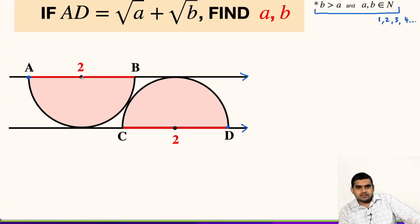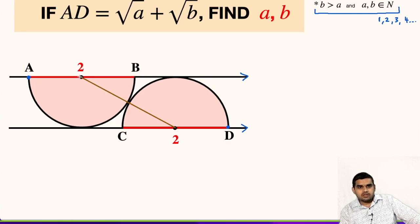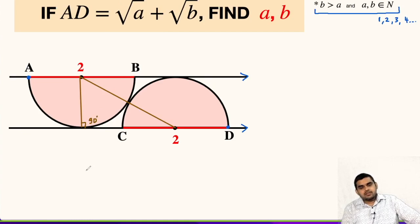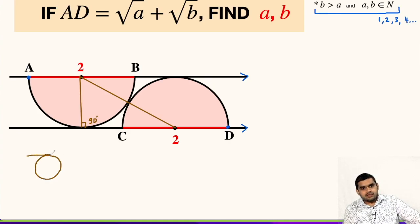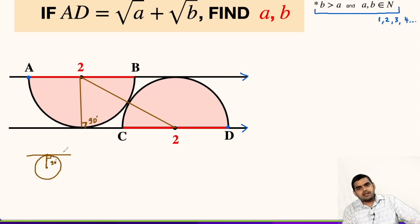In order to solve this question, first of all let us join the two center points. We will also drop a perpendicular from the center of the first semicircle, so this angle will be 90 degrees. The reason is we have a theorem: if this is the tangent to the circle, this point is the center, and this is the point of contact, then the line segment joining the point of contact with the center always makes a 90 degree angle.